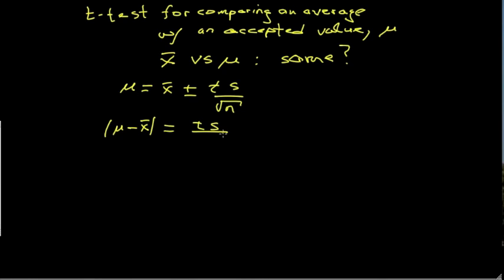So the right-hand side just becomes this term. I'm going to solve for t in here. So t is equal to the difference divided by s times the square root of the number of measurements.